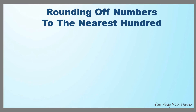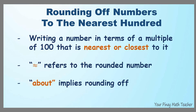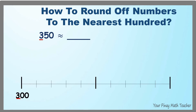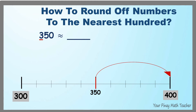Now let's round off numbers to the nearest hundred. It means writing the number in terms of a multiple of 100 that is nearest or closest to it. For example, 350. Its hundreds digit is 3, and 350 is in between 300 and 400 — right in the middle. Once the number reaches the middle, it has to be rounded off to the greater number. Therefore, 350 is rounded off to 400.